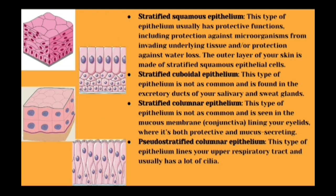Stratified squamous epithelium has a protective function — it protects against microorganism invasion into tissues and also against excess water loss from the skin. Stratified cuboidal epithelium is not very common but is found in the excretory ducts of salivary and sweat glands. Stratified columnar epithelium is also uncommon and is seen in the mucous membrane lining or in the eyelids, where it is both protective and mucous-secreting. Pseudo-stratified columnar epithelium lines the upper respiratory tract.